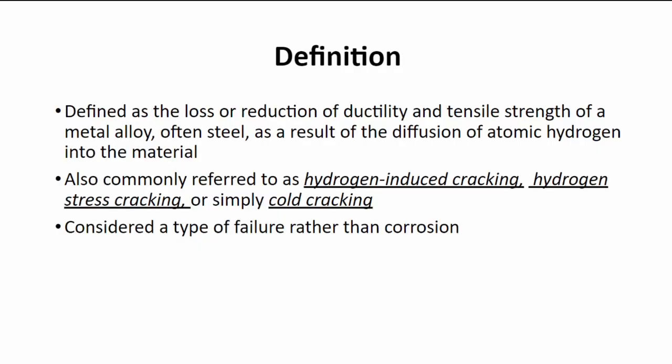Right off the bat, we'll start with the definition. Hydrogen embrittlement is the loss or reduction of ductility and tensile strength of an often steel alloy and is the result of diffusion of atomic hydrogen in the material.